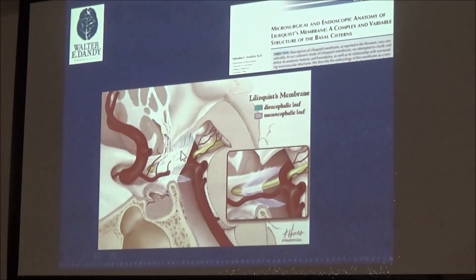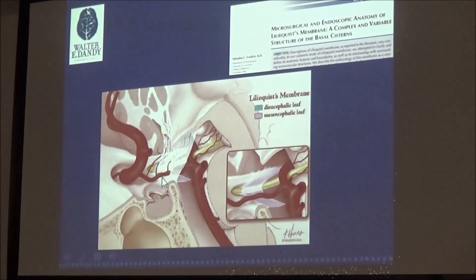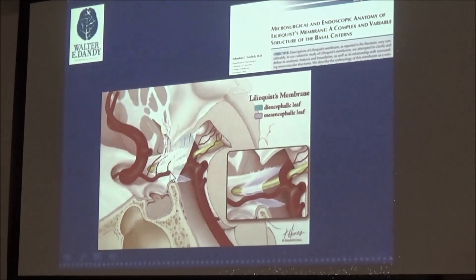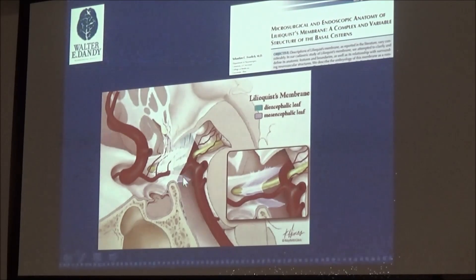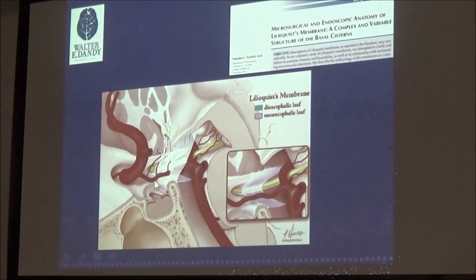The membrane Liliequist is an arachnoid membrane that extends from the posterior clinoid all the way to the mammillary bodies. It usually has two leaves. The first leaf is the diencephalic leaf, which is almost always present, and the mesencephalic leaf, which is usually incomplete and goes almost all the way to the basilar artery. A lot of the perforators of the posterior communicating artery are actually piercing this membrane.